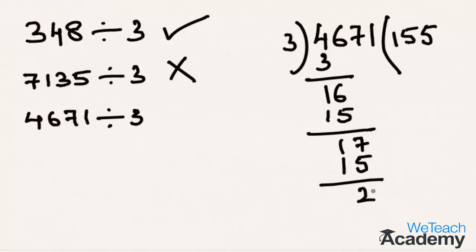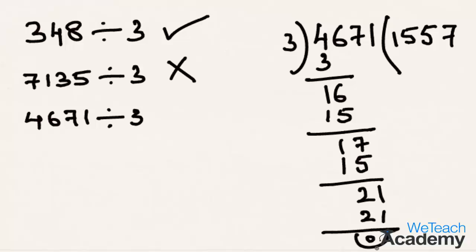Bringing down the last digit, that is 1, we get 21. Now 3 times 7 is 21. Therefore 21 minus 21 we get the remainder as 0. Hence the number 4671 is exactly divisible by 3.